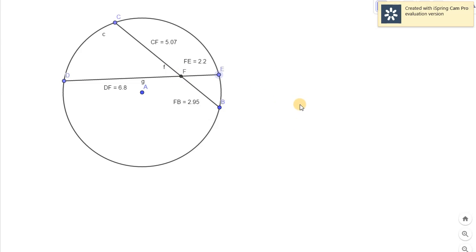That is the point of intersection. You will notice that this chord CB will have CF and FB. It is stated here that CF is 5.07 units and FB is 2.95 units. As with FE, it's 2.2 and DF is 6.8. Obviously they are not the same. They don't have the same values. They are not bisected by any chance.